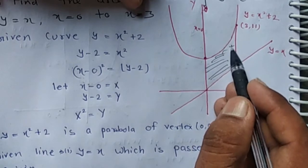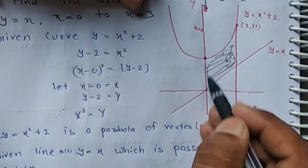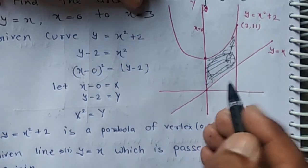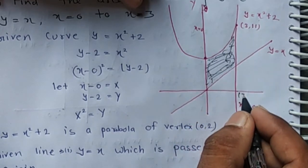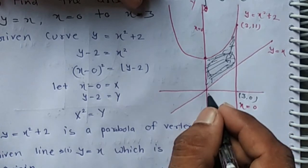We have to find this bounded region. The upper limit of x is 3, and the lower limit is 0.